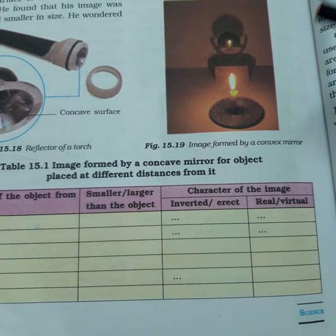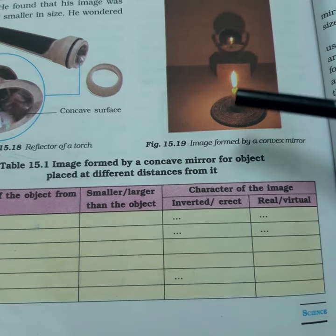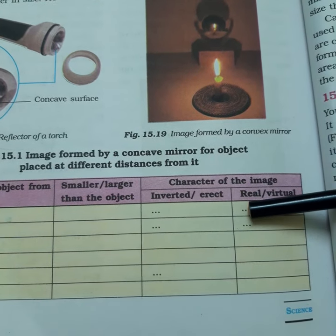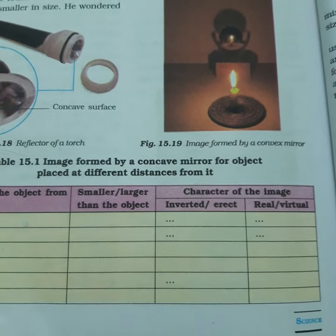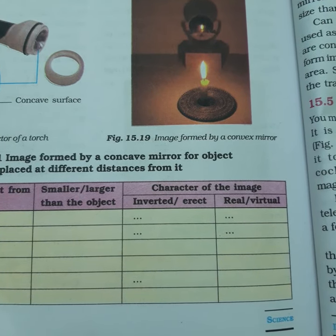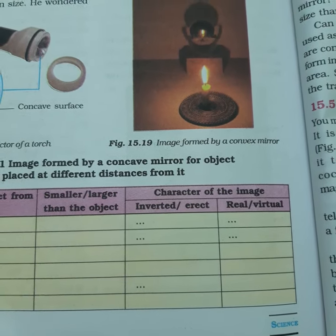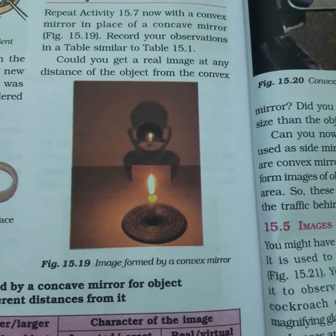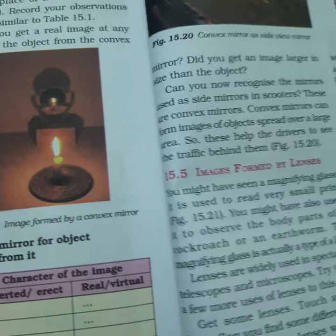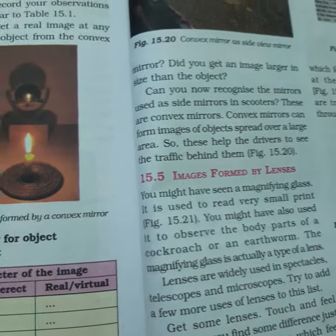Inverted means the image is reversed — the tip of the object appears at the bottom and the bottom at the top. Erect means the image is straight. A real image is one that can be obtained on the screen, while a virtual image cannot be obtained on the screen. You will observe whether the convex mirror produces a real image and whether the image is larger or smaller.